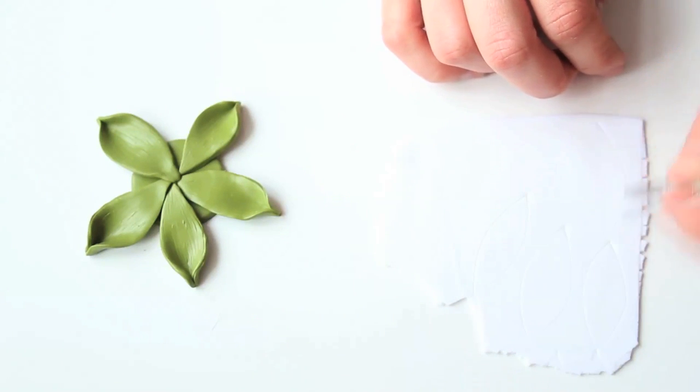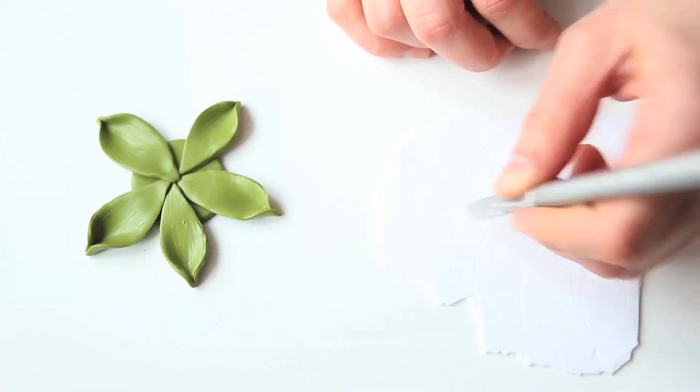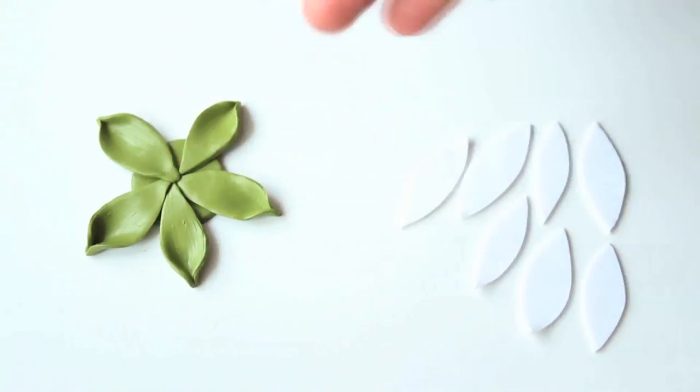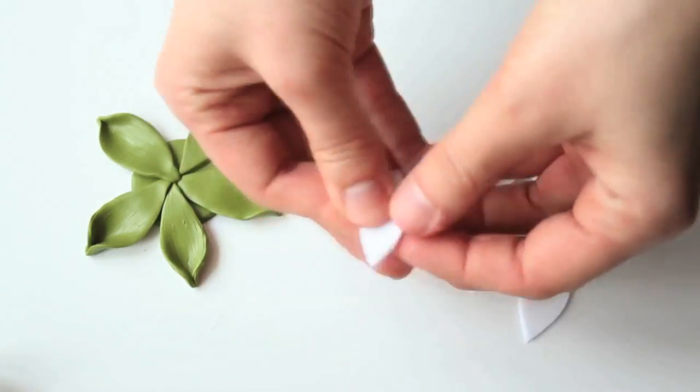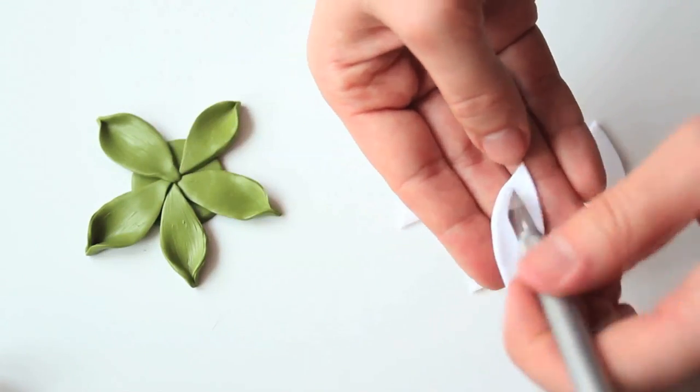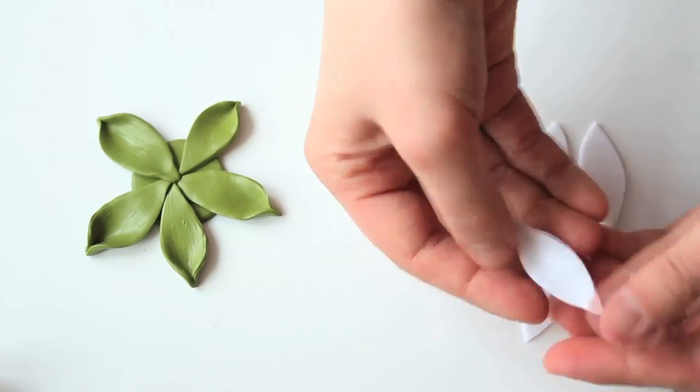Same as with the leaves we will need to cut out five petals to begin with. Later on we will need another ten at least. You will need to make them exactly the same way as you made the leaves. Don't leave them just flat.